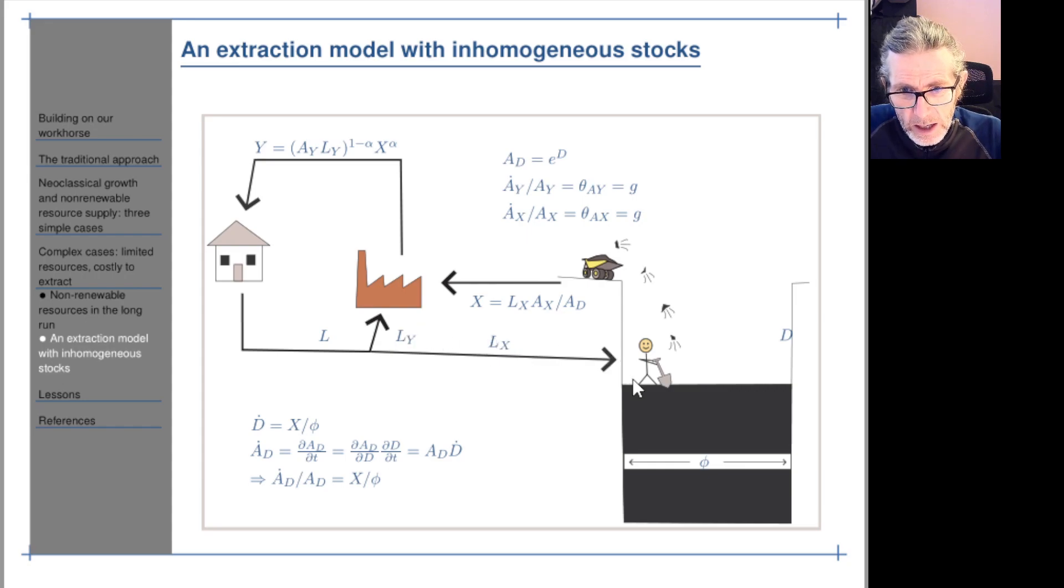What's the flow of extraction? It's L-X times A-X, so that's effective labour inputs, divided by A-D, where A-D is the difficulty of getting the resource onto the truck. A-D is e to the power of D, where D is the depth. So that's the model. As I said, it's done slightly differently in the paper - it's effectively the same, but just a bit of a tweak on this.